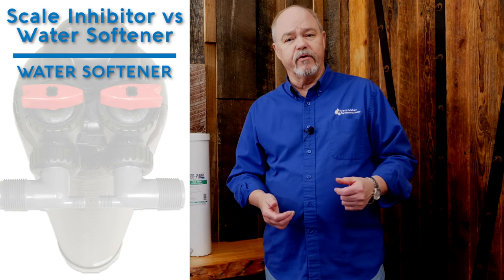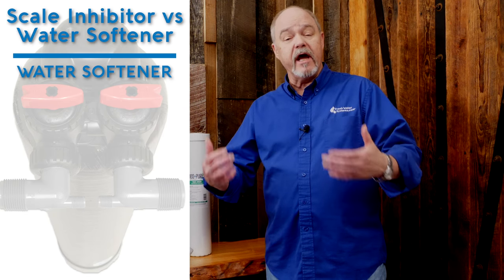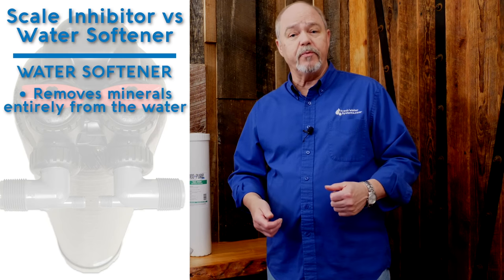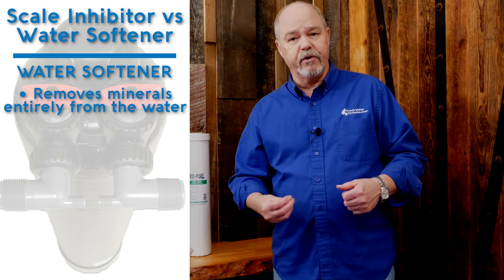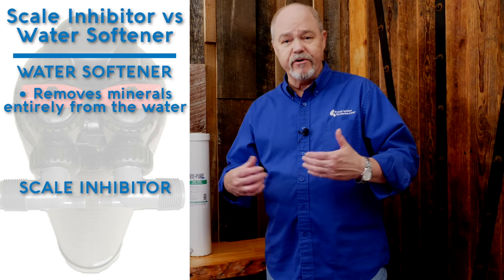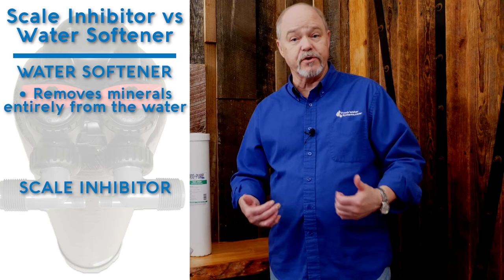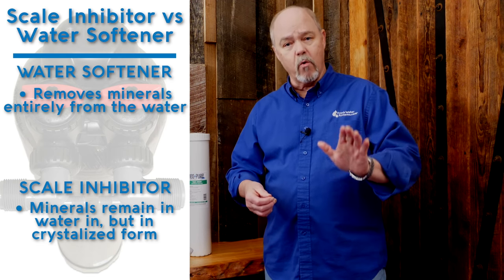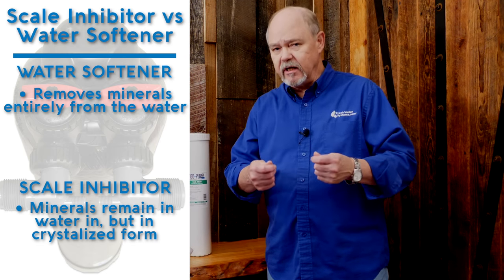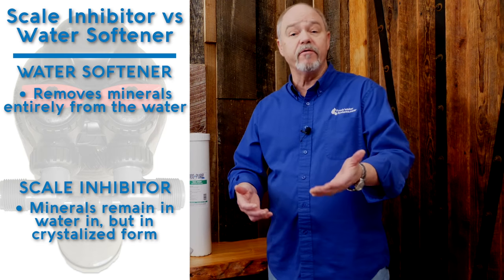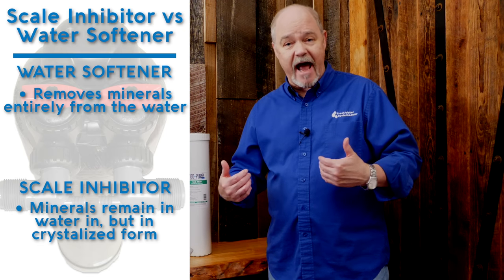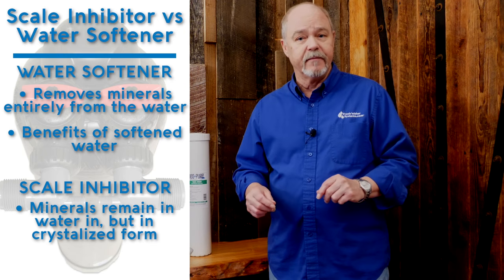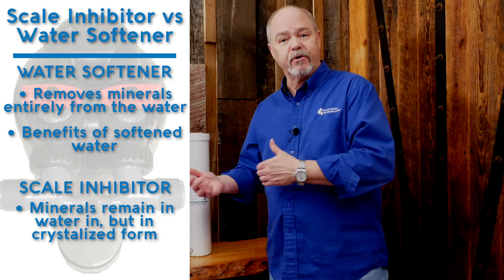A scale inhibitor, such as our Scale Net product, and a water softener do similar things, but the results are different. A water softener, when it takes that mineral out of the water, gives you a lot of extra benefits — for example, you can use less soap and detergent because it's not bonding with hardness minerals. With a scale inhibitor, the minerals are still there, so you're not going to get the benefit of cutting back on soaps and detergents. The minerals will still bury themselves in fabrics, so you may see your whites get a little dingy, and your towels and clothing might feel a little stiffer. A water softener, by taking the minerals out, is where we get the benefits of softened water.